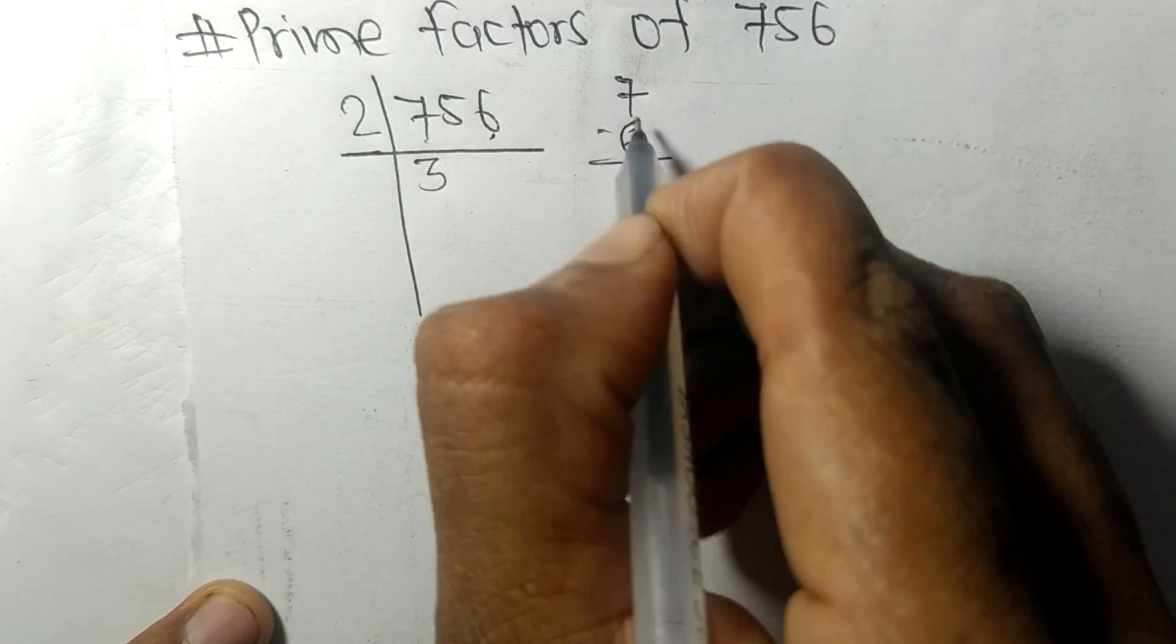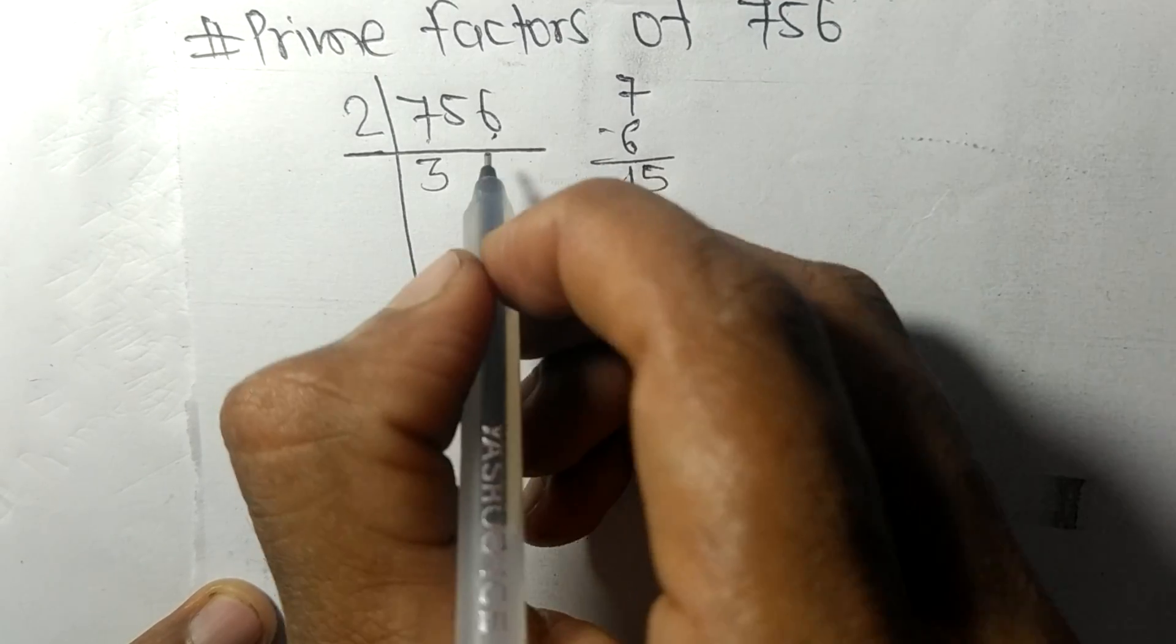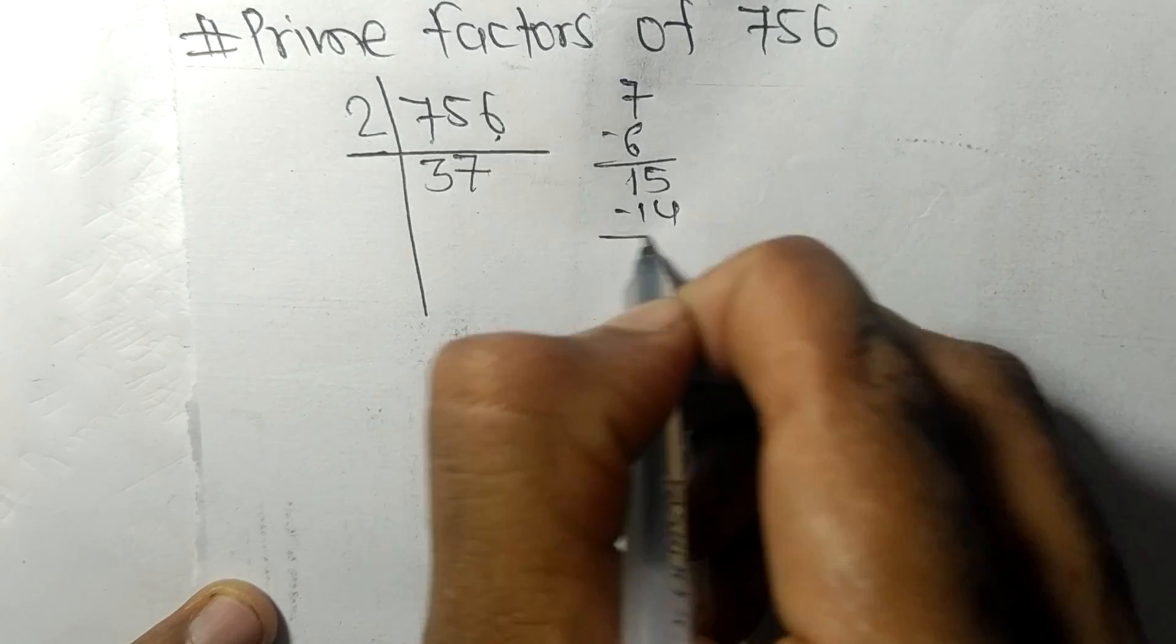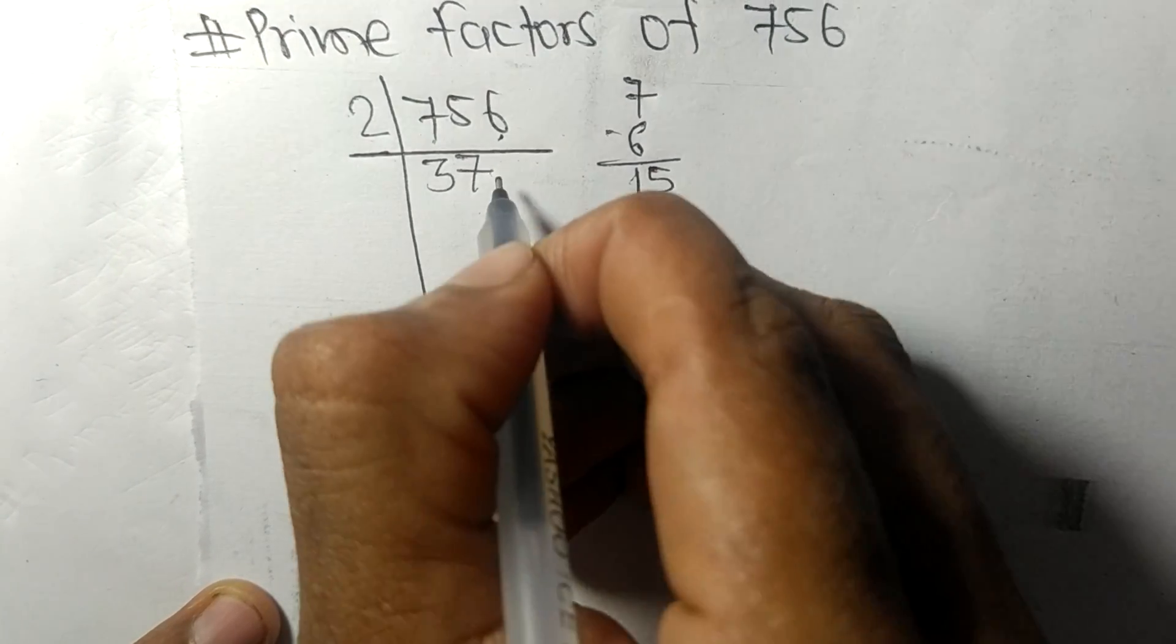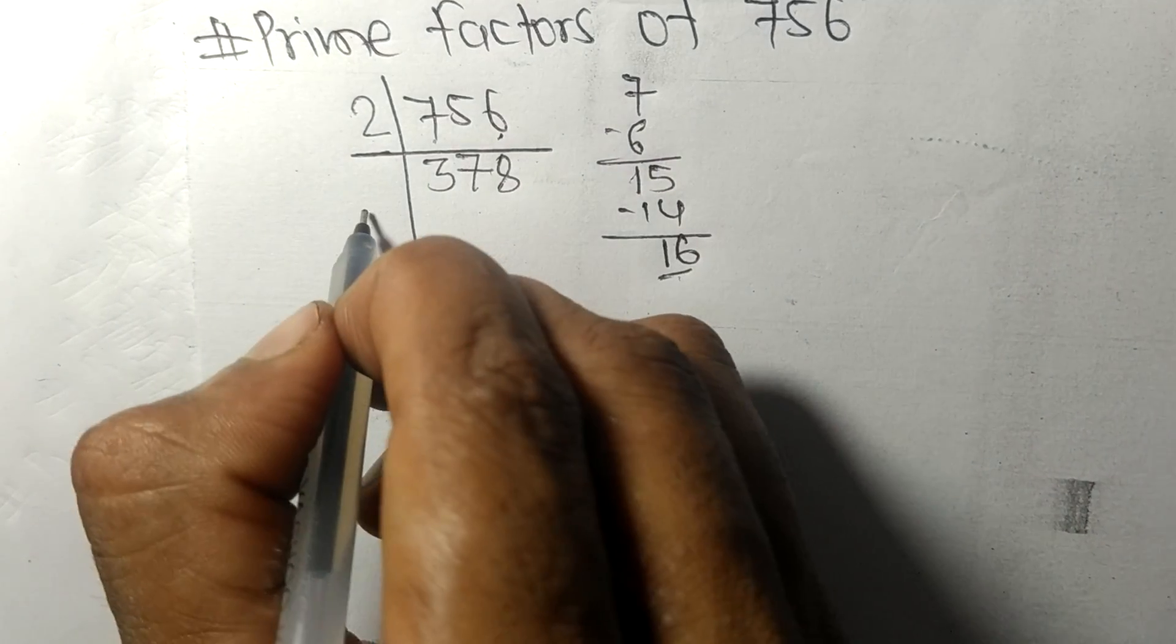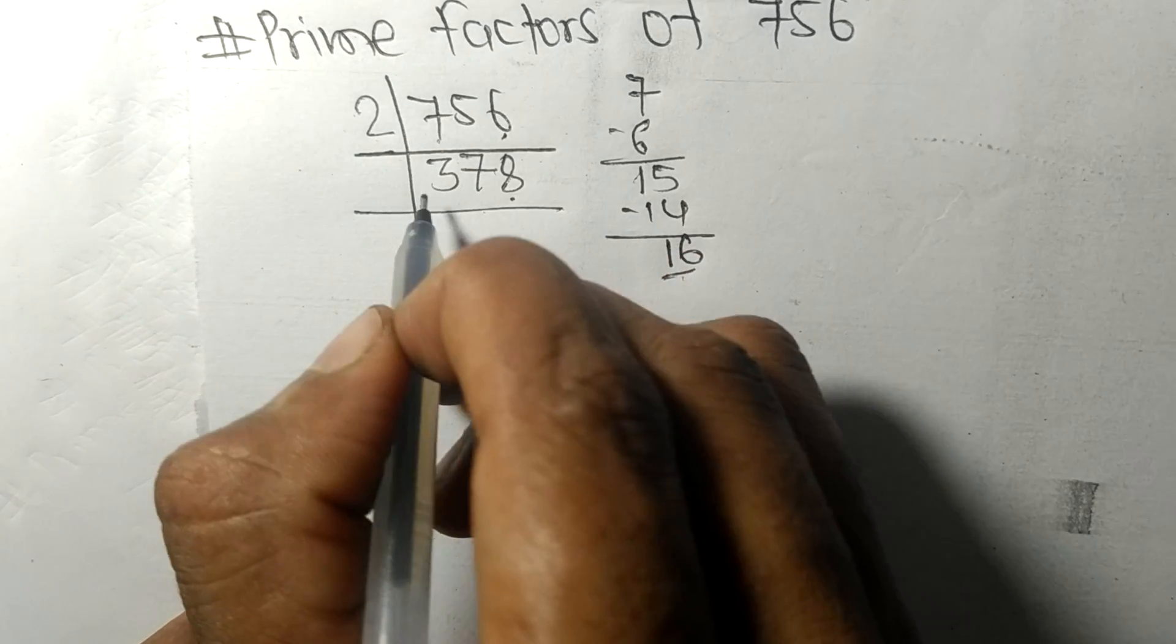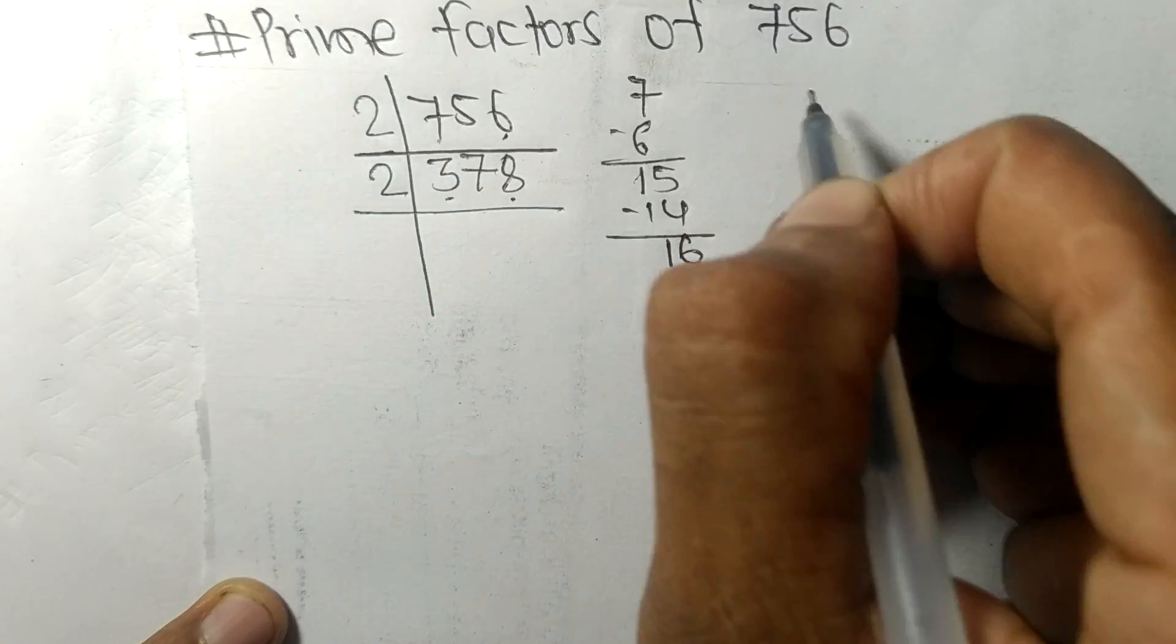Again it has even number 8 at last so it is divisible by 2. Here we have 3, so 2 times 1 equals 2. On subtracting we get 1 and 7, 17. So 2 times 8 equals 16 remainder 1 and 8, 18. 2 times 9 equals 18.